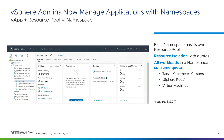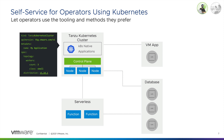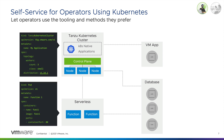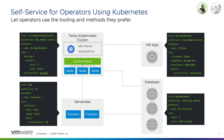vSphere with Tanzu has enabled the virtual machine service, where now a Kubernetes operator can deploy a virtual machine the same way that they would deploy a Tanzu Kubernetes Grid cluster, or a Kubernetes deployment using kubectl, which is the same interface they're already familiar with.